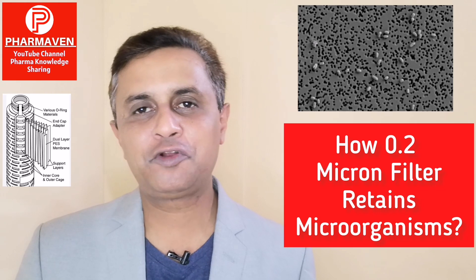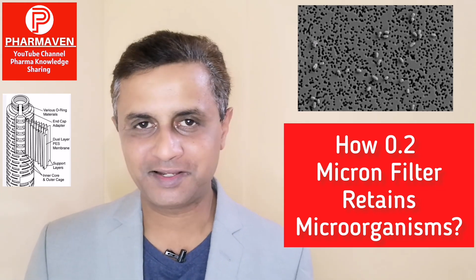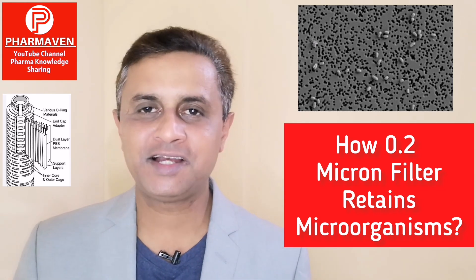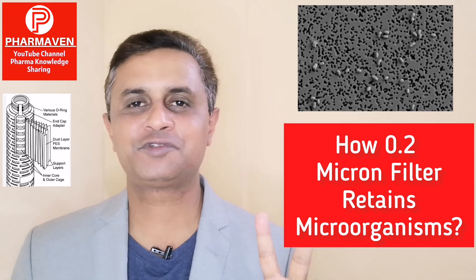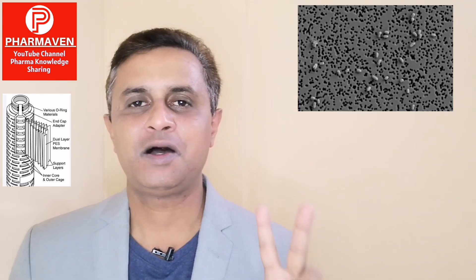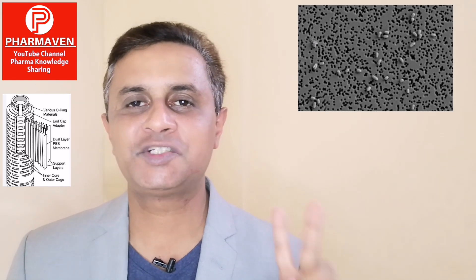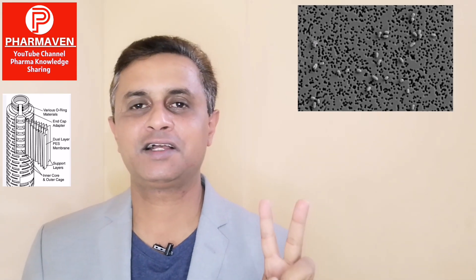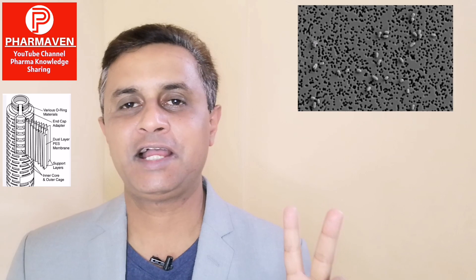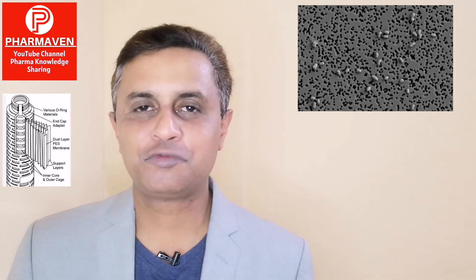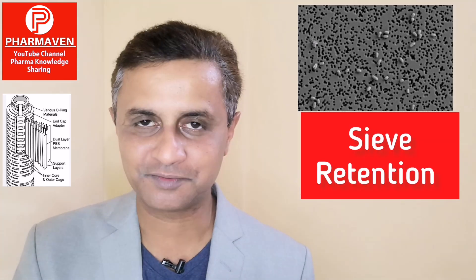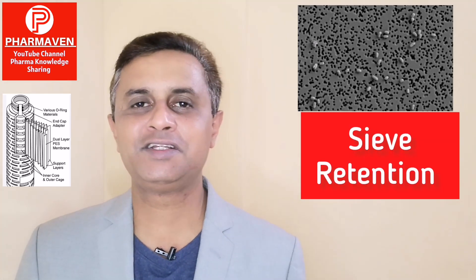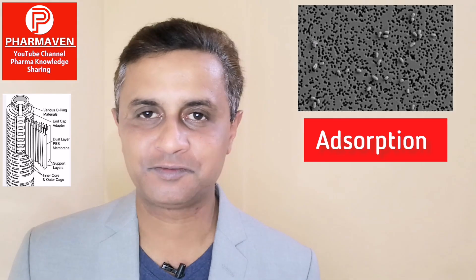In today's video, we will understand how a 0.2 micron filter retains bacteria — what is the science behind it. There are two mechanisms by which a 0.2 micron pore size filter retains bacteria of 0.2 micron size and above. One is retention by sieving — physical retention — and the second is retention by adsorption, which is a charge-related mechanism.